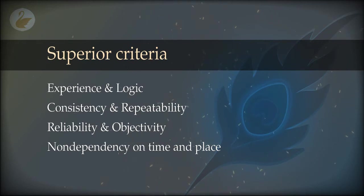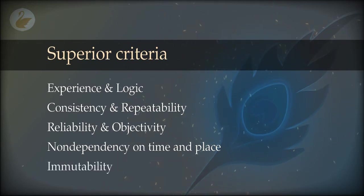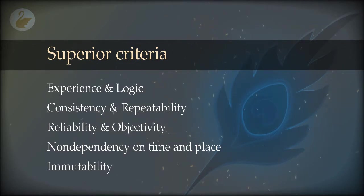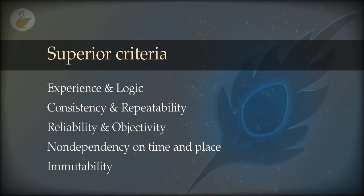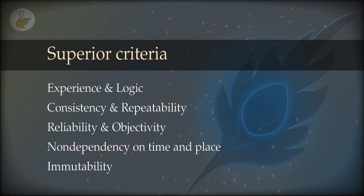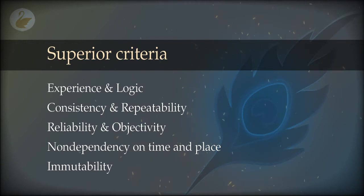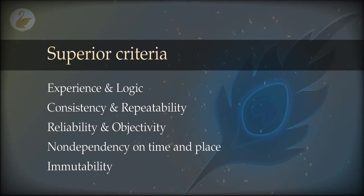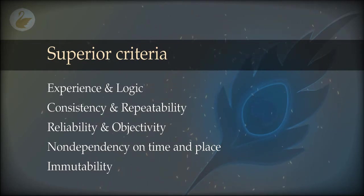A very important criteria is immutability, which means the truth once established does not often change. If it changed, it was not true. It may happen during our life experience that some things which we thought were true change, and then the true becomes the false. So in ideal cases, that which never changes is the most certain thing. It holds on in all situations — subjectively, objectively — very consistent, very repeatable, very logical, and it is there at all times and all places. That makes it super true. So immutability is a very strong criteria.